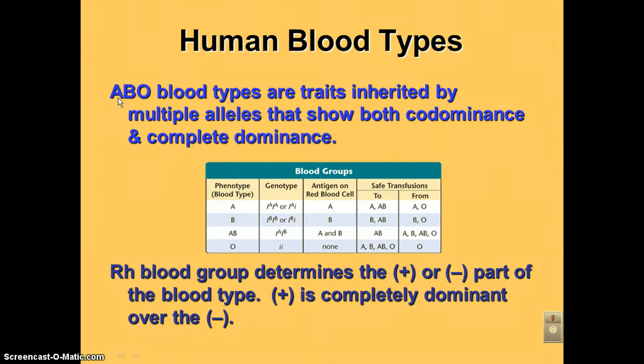I just want to remind you that A, B, and O show multiple alleles because you have three alleles for the blood type. It also shows co-dominance because A and B are co-dominant to each other, and complete dominance because both A and B are dominant over O.